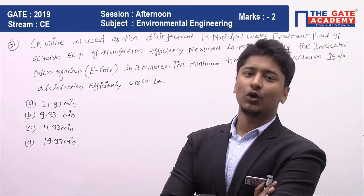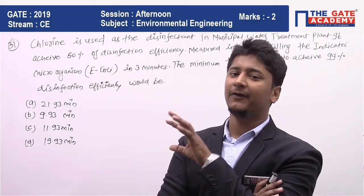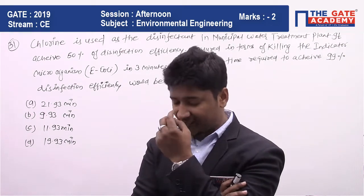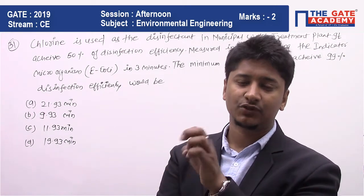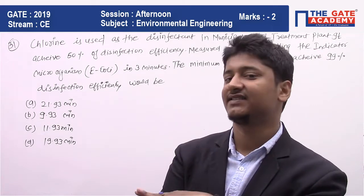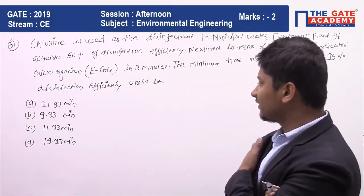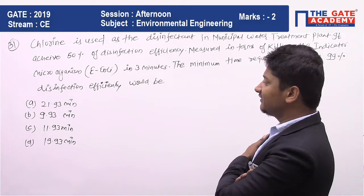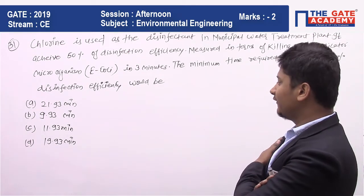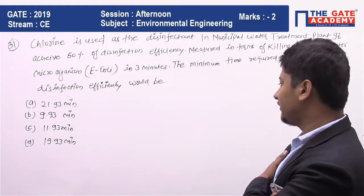So, for 50% disinfection efficiency you require three minutes. The question asks how much time is required for 99% efficiency. The options are: A) 21.93 minutes, B) 9.93 minutes, C) 11.93 minutes, and D) 19.93 minutes.